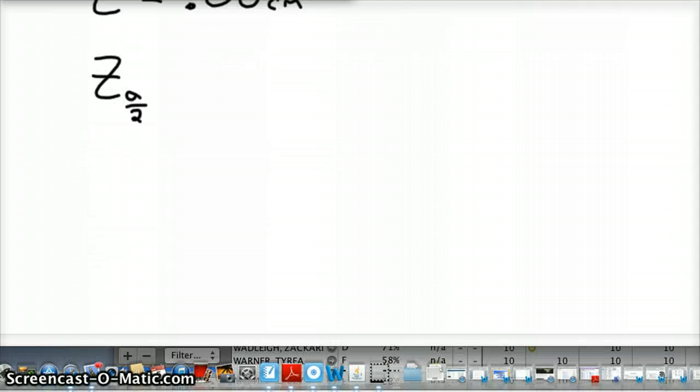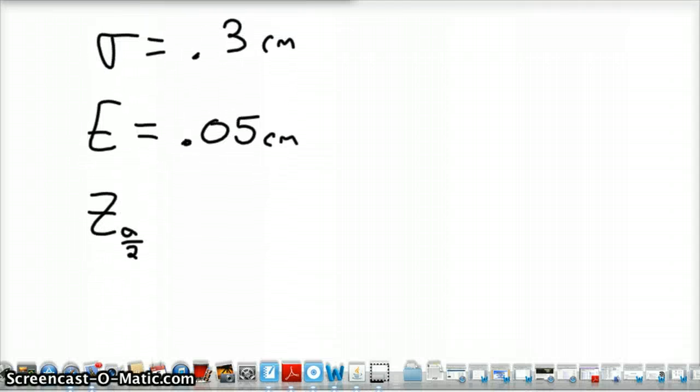So we need a 95% confidence interval with that. A 95% confidence interval would be 95 divided by 2, which is 47.5%. So we're looking for 0.475 in your z-score table.